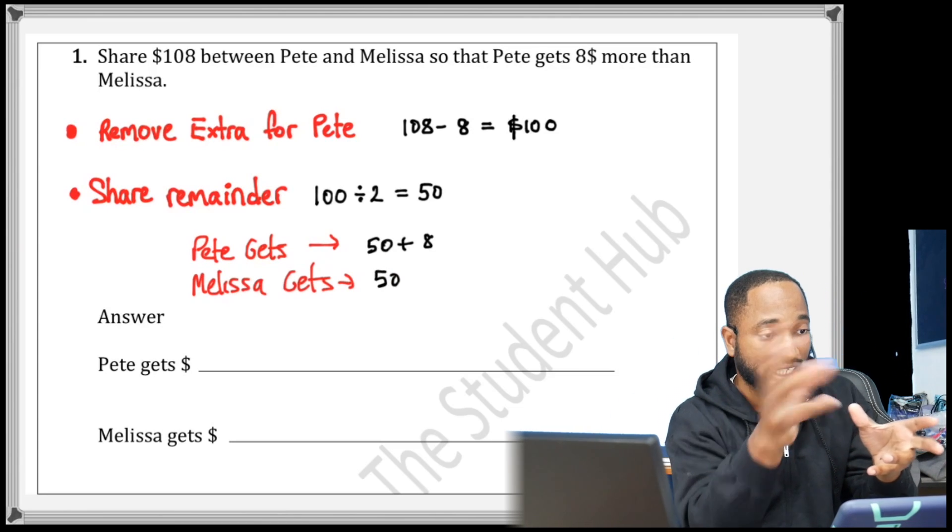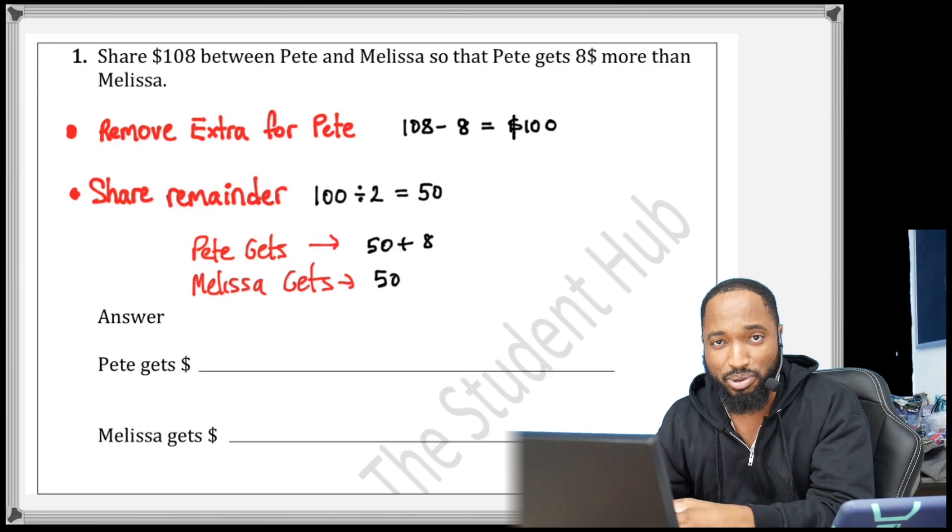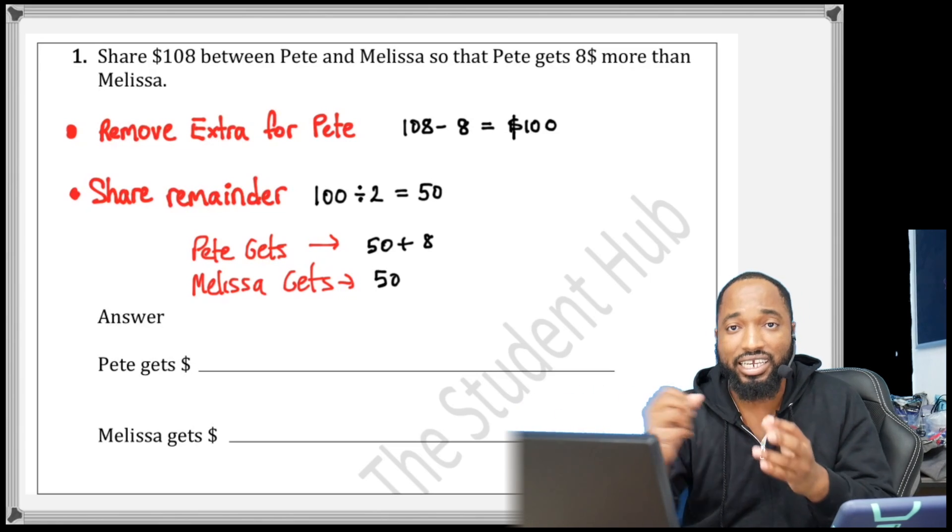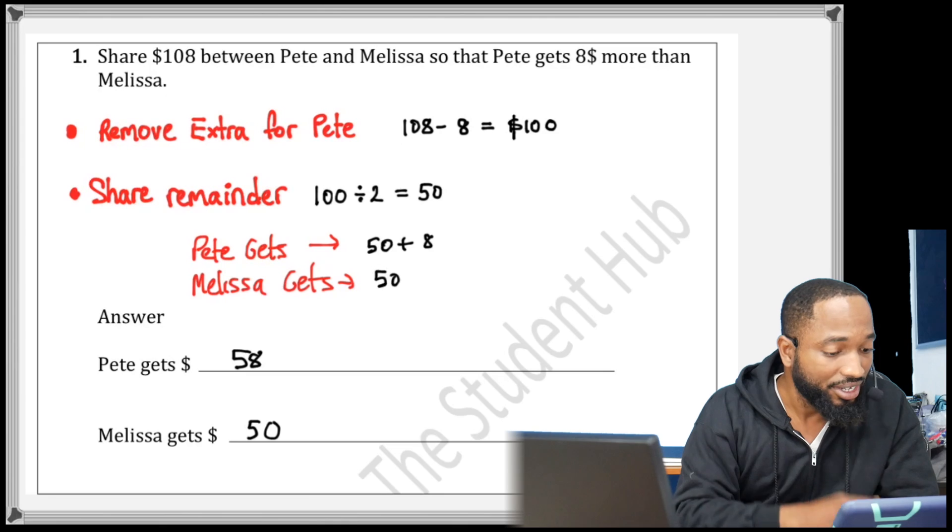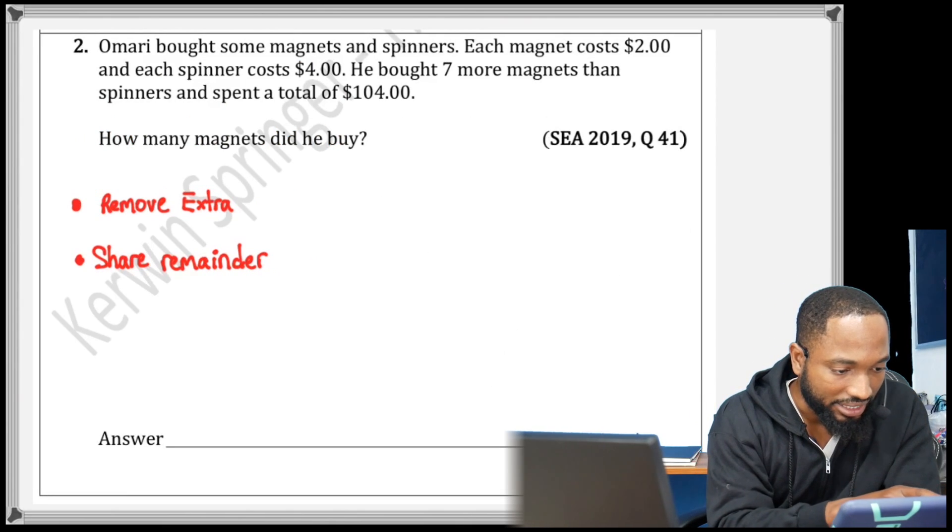So Pete is gonna get his $50 plus the extra. In the end you want to give back anybody who was getting extra—you want to include the extra into the piece that was divided by the remainder. We got $50 when you share the remainder, but Pete has to get this $8 back. This is an easy question.